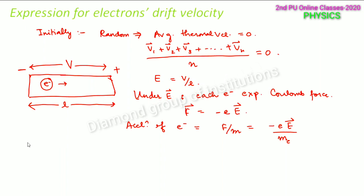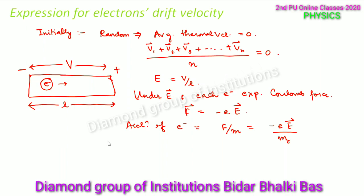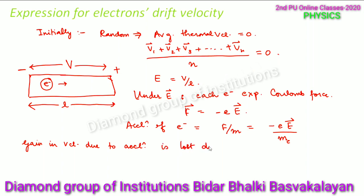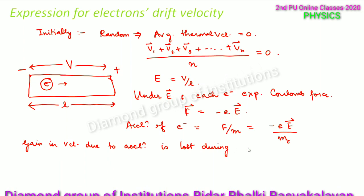But the gain in velocity due to this acceleration is lost during the collision of the electron with the positive ions. So the gain in velocity due to acceleration is lost during collision with positive ions.